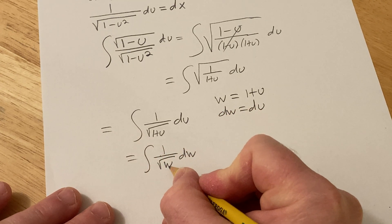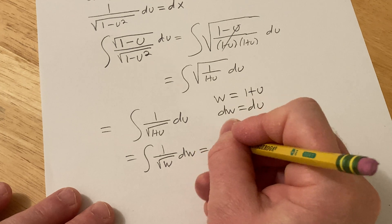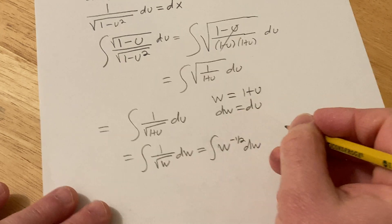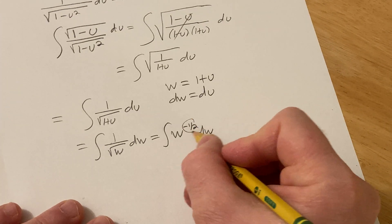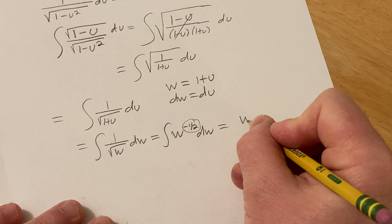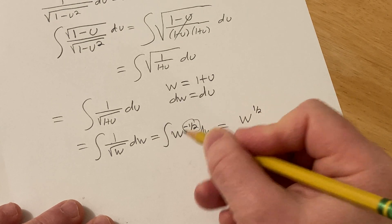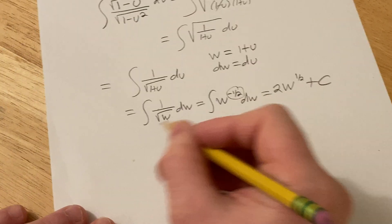This is really a w to the negative 1 half on the bottom, when you bring it up it becomes negative. We can integrate now using the power rule, so you take the exponent and you add 1, negative 1 half plus 1 is 1 half, divide by 1 half, but it's easier to multiply by 2, plus our constant.